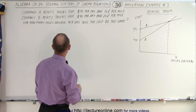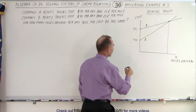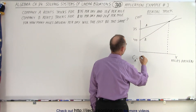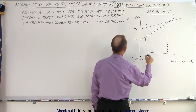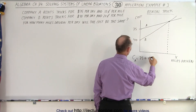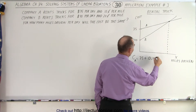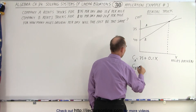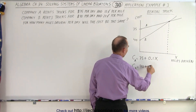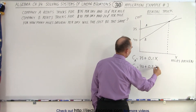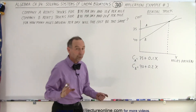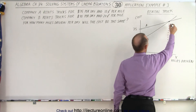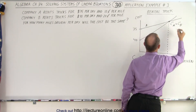Let's come up with two equations. The cost for Company A equals 75 dollars per day plus 0.1x, where x is miles driven. The cost for Company B equals 40 dollars per day plus 0.2x. We want to know at what point the cost will be the same, so we're going to set the cost for A equal to the cost for B.